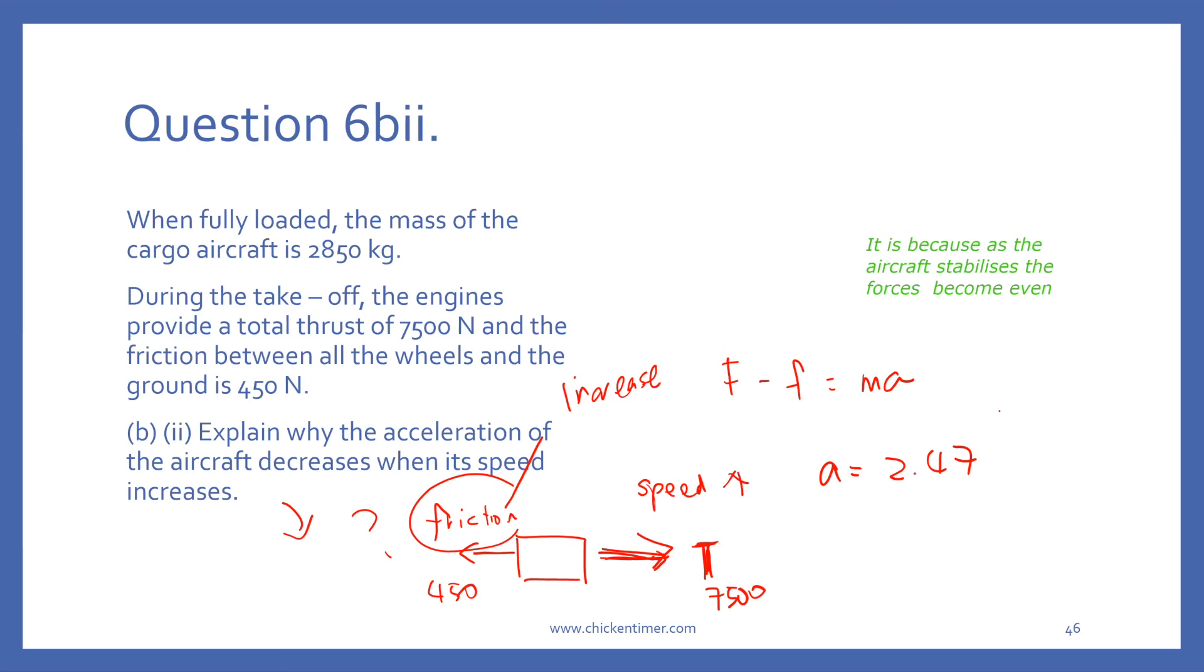Now the speed increases. As the speed increases, the friction increases. Let's say now it becomes 1000. What is the new acceleration? You'll get 7500 minus 1000 equals 2850 times A. 6500 divided by 2850. It shows that when the speed increases and friction increases, the resultant force decreases and the acceleration will decrease.